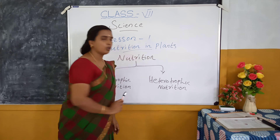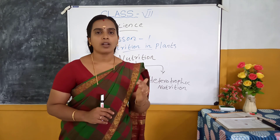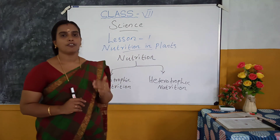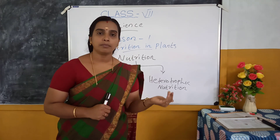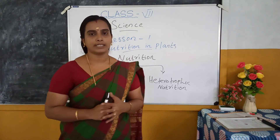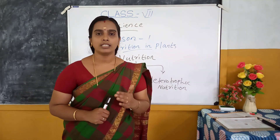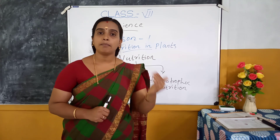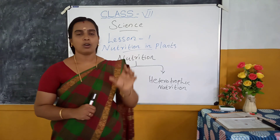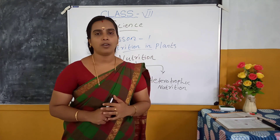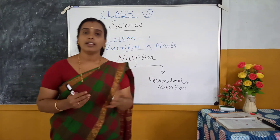The first one is Autotrophic Nutrition. The mode of nutrition in which organisms make food themselves from simple substances is called Autotrophic Nutrition. 'Auto' means Self, and 'Trophos' means Nourishment. Examples of Autotrophic Nutrition are all green plants, as we know plants make their own food.